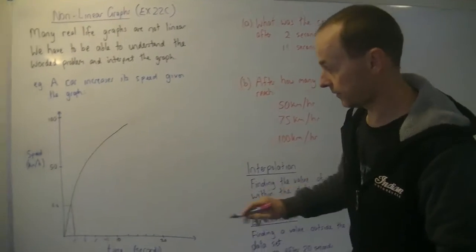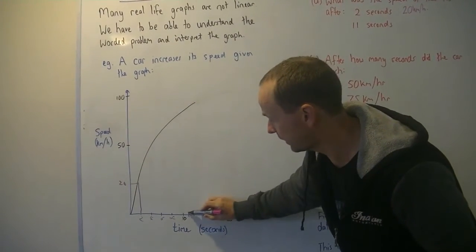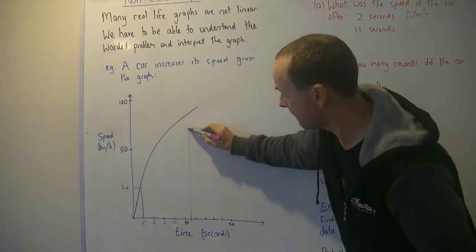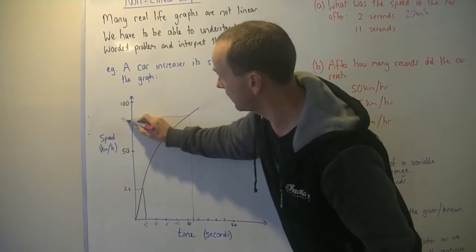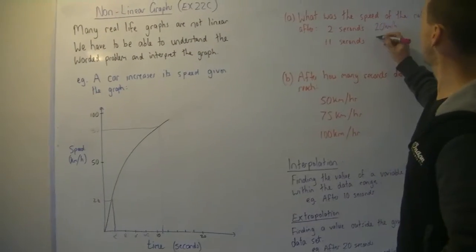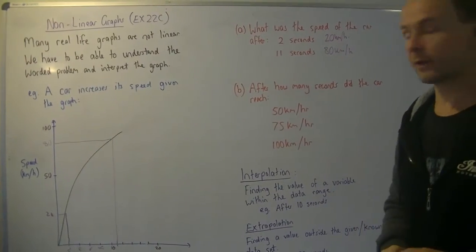Next one, after 11 seconds. So there's 10 and there's 12, so the trick there is 11 is halfway between that. So you go up with a ruler and across as accurately as you can and I'm going to estimate that's 80 kilometres an hour. Excellent. So that's pretty straightforward so far.